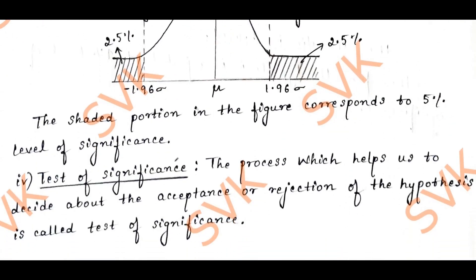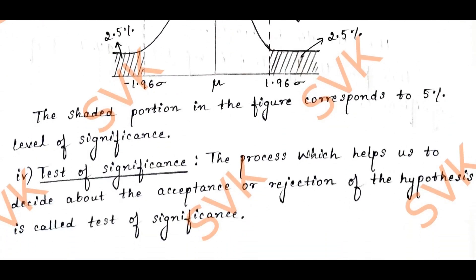Test of significance: the process which helps us to decide about the acceptance or rejection of the hypothesis is called test of significance. These are the four definitions in question number 6c.